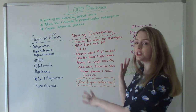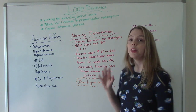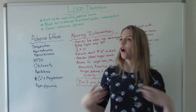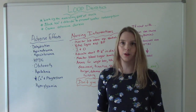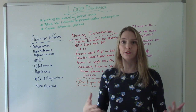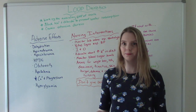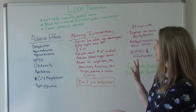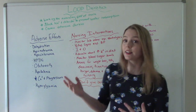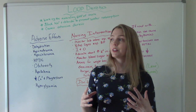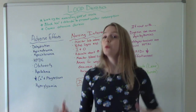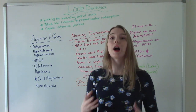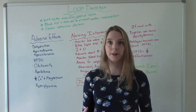They cause extensive diuresis. So if your patient is on a loop diuretic, they're urinating all of the time — quite frequently. Loop diuretics work, and sometimes they work a little too well, which can cause some problems and complications.